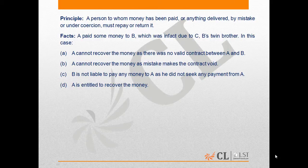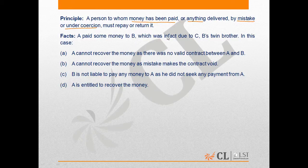In this question, the principle states that a person to whom money has been paid or anything delivered by mistake or under coercion must repay or return it. As per the facts, A paid some money to B, which was in fact due to C — meaning A mistakenly paid the money to B, who was C's twin brother.